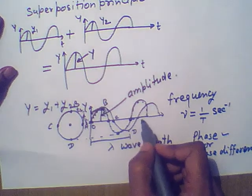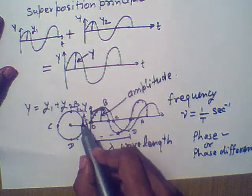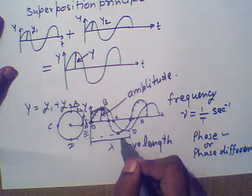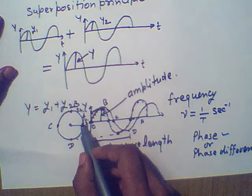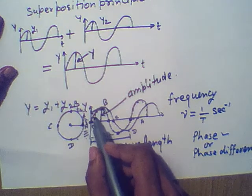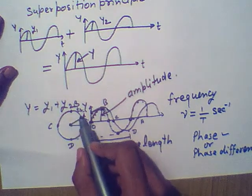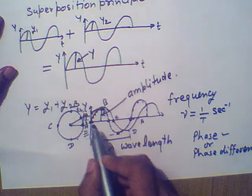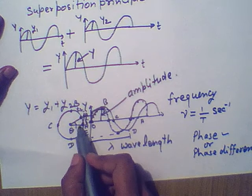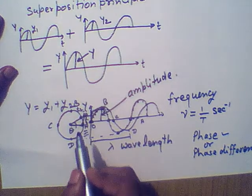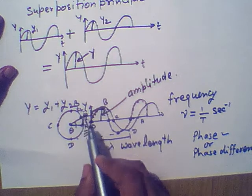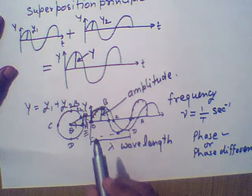We observe that a particle in circular motion corresponds to a wave in simple harmonic motion. When a particle starts from position A, it corresponds to a wave starting from the origin. But if a particle starts from point P, making an angle theta with the horizontal axis, then theta is the phase difference between the two waves — one starting from A and one starting from point P.